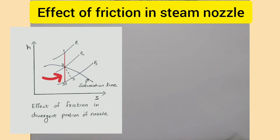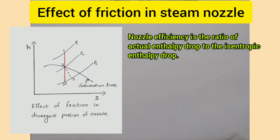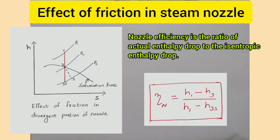From the figure, process 1-3s is the ideal case of flow through the nozzle, which is isentropic, and the final state is 3s. But in the actual case, because of the irreversibilities in the divergent part of the nozzle, entropy increases and the final state is 3. Nozzle efficiency is the ratio of actual enthalpy drop to the isentropic enthalpy drop. Therefore, nozzle efficiency equals (h1 - h3) / (h1 - h3s).